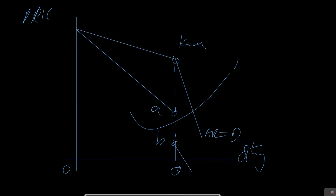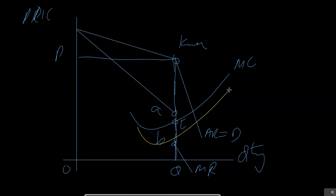If the marginal cost curve intersects the marginal revenue curve at any point within the discontinuous range between A and B, then equilibrium is established — let's say at point E — and the quantity produced is Q. The price will remain rigid at P. Similarly, if marginal cost cuts anywhere between point A and B, the quantity will not change and the price will also remain the same. This is the graph of profit maximization in the oligopoly market structure.